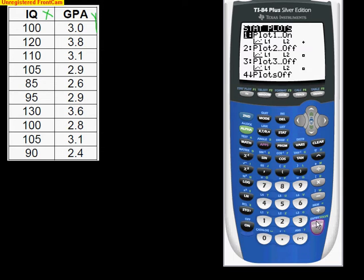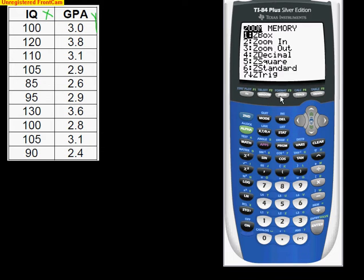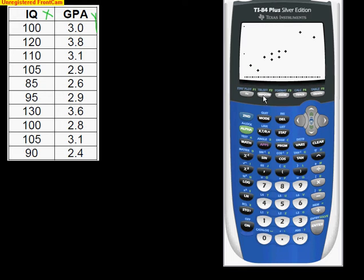Once you've typed that in, you can take a look at the scatterplot by going to second statplot or second Y equals, making sure your plot one is turned on, making sure that it's a scatterplot. Make sure you've got the correct X list, L1, that's the IQ. Correct Y list, that's L2. Make sure that you have anything in Y equals cleared out so it doesn't come up. Do a zoom nine, which is your zoom stat. We notice the scatterplot does look fairly linear. I don't see any big curve in it. It does show a linear relationship.